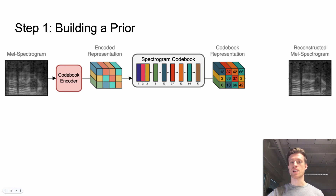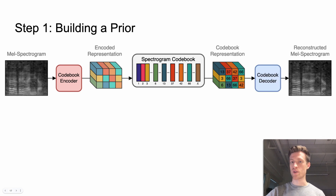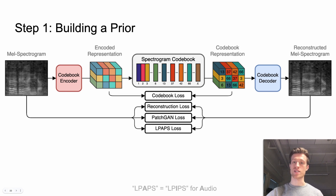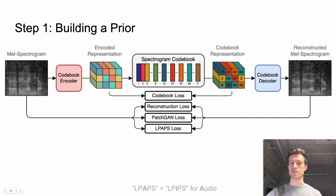As a result, we will have a quantized representation, which we will decode back to the spectrogram dimensions. To train the discrete autoencoder, we will use the traditional VQAE losses, plus the adversarial and perceptual losses proposed by VQGAN.